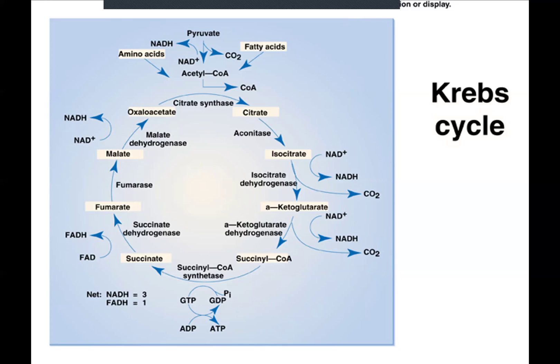Acetyl gets hooked onto oxaloacetate, which has four carbons, and we make something called citrate, which has six carbons. Interestingly, glucose also started with six carbons. The citrate spins around the cycle and we end up with four carbons — we lose two carbons as more CO2. At basically every step we're pulling electrons off. Most of those electrons go on to NAD to make NADH; a few go on to FAD to make FADH2. Then we come back around and this just goes around and around — that's how the Krebs cycle works.